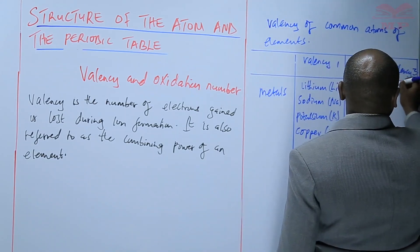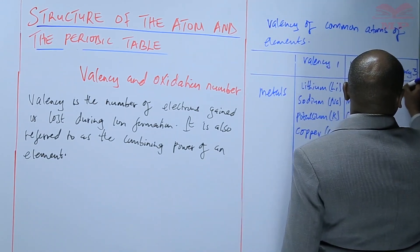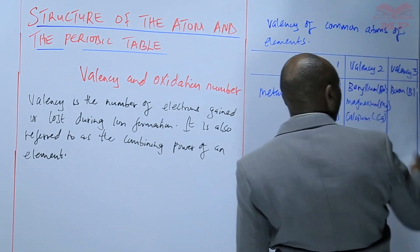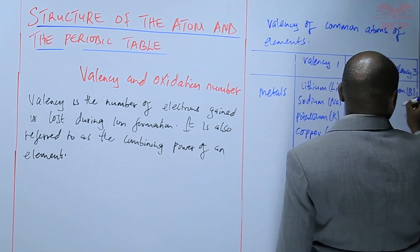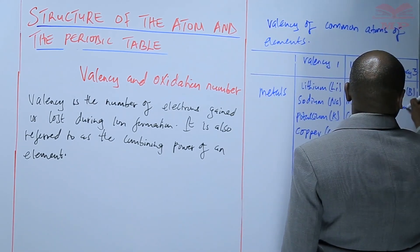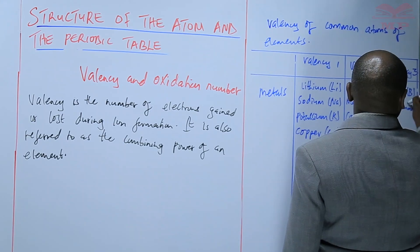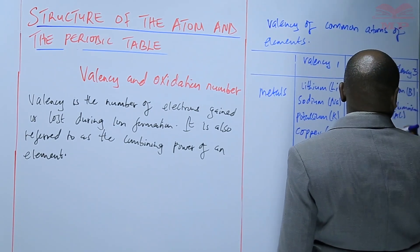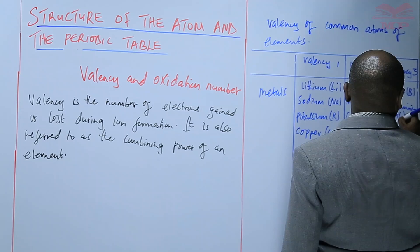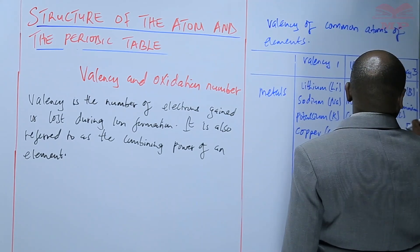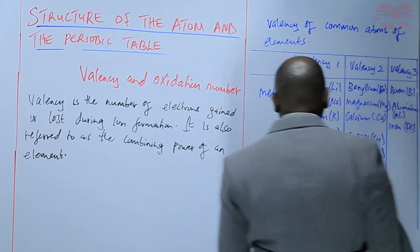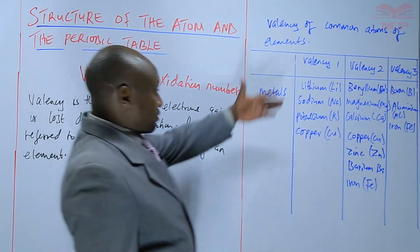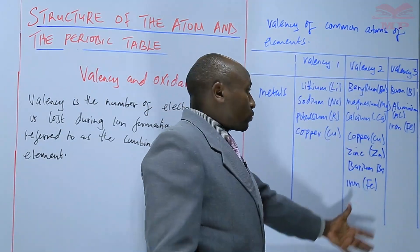For a valency of 3, we have boron — basically those that lose 3 electrons — and aluminium. We have also talked about iron. So those are the metals that have a valency of 1, valency of 2, and valency of 3.